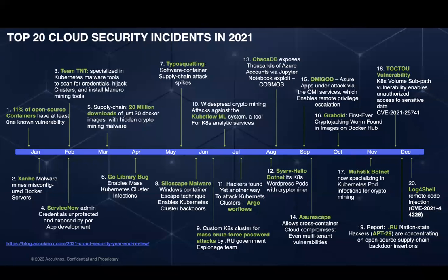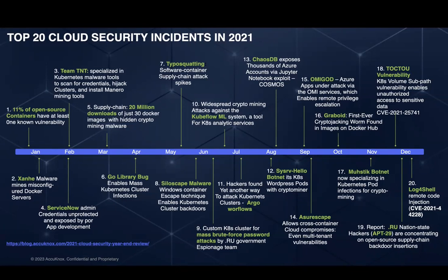So, what problem do we solve? We solve the problem of advanced attacks. These are just a sampling of cloud attacks that occurred in 2021 — advanced attacks that cannot be detected, let alone prevented, using simple cloud security controls. One needs advanced zero-trust security.